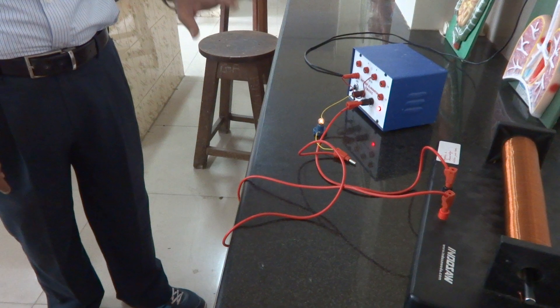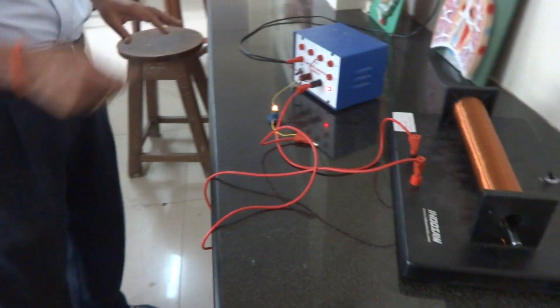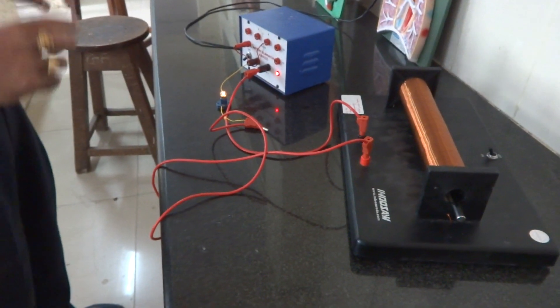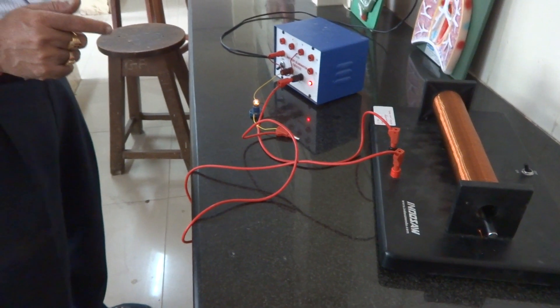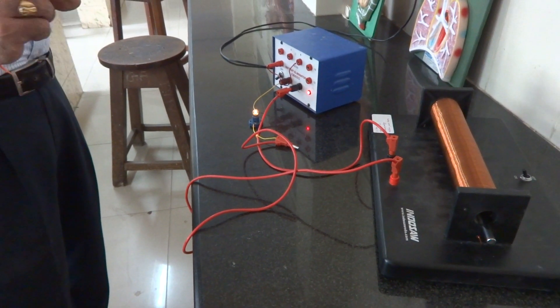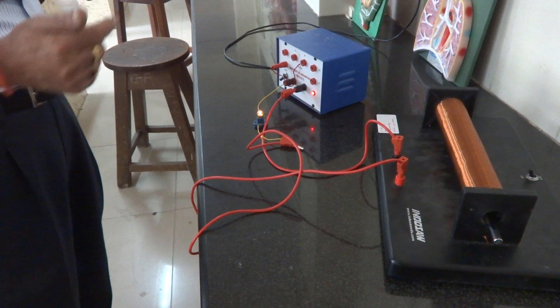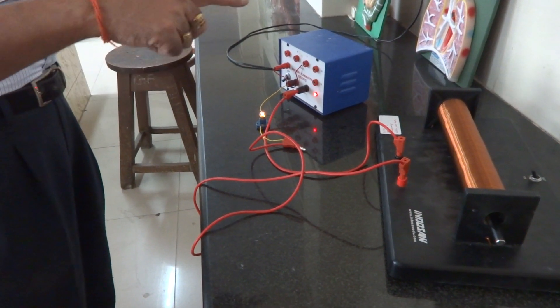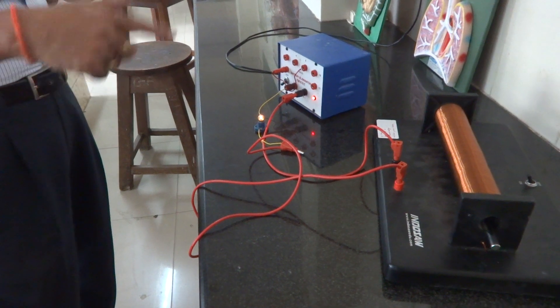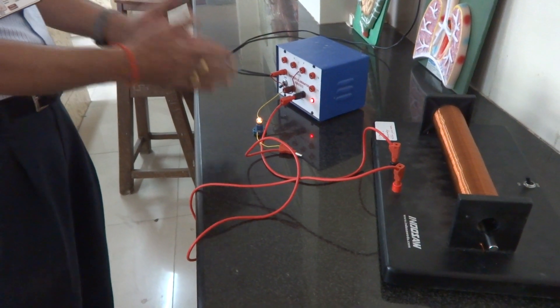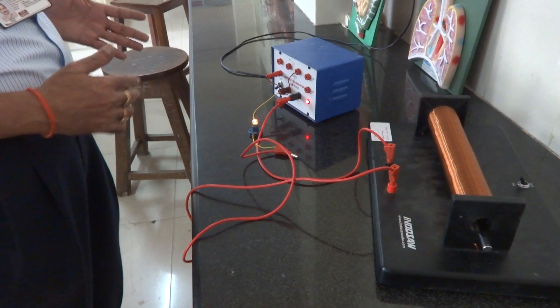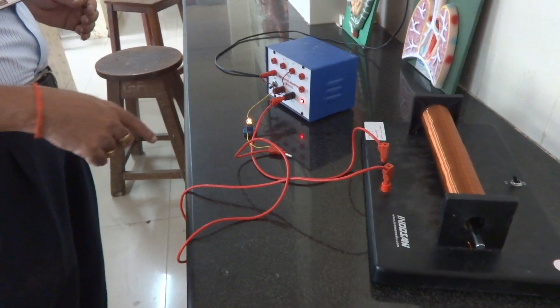This happens because when I insert the iron rod, the coefficient of self-induction is increased as the iron rod concentrates the magnetic field inside the solenoid. So then the net effective reactance, because resistance as well as inductor is also connected, is increased.